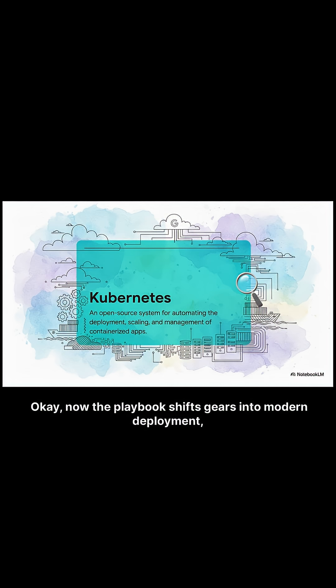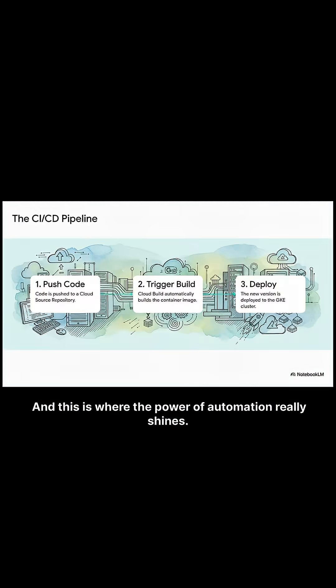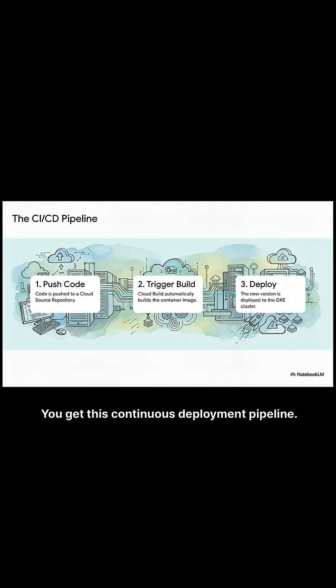The playbook then shifts gears into modern deployment, starting with containerization, all thanks to Kubernetes. And this is where the power of automation really shines — you get this continuous deployment pipeline.